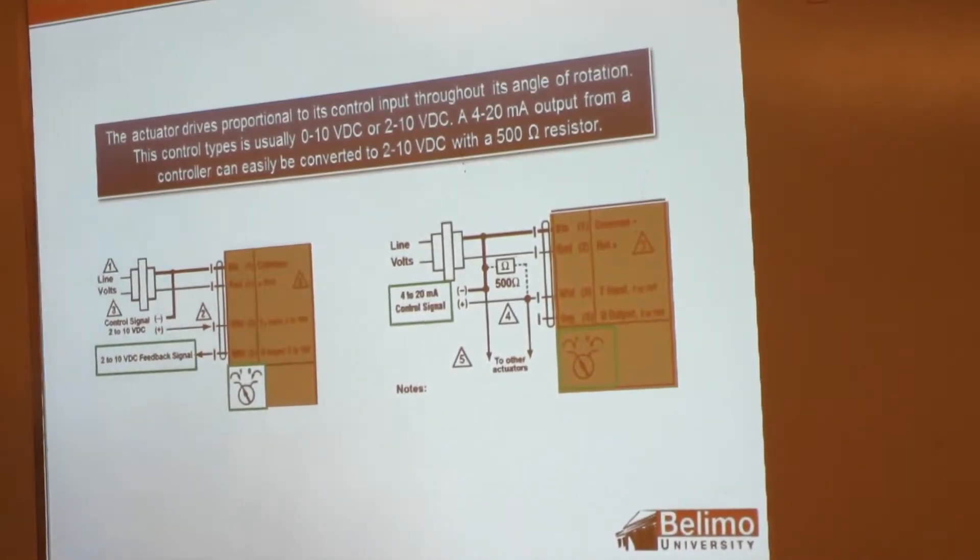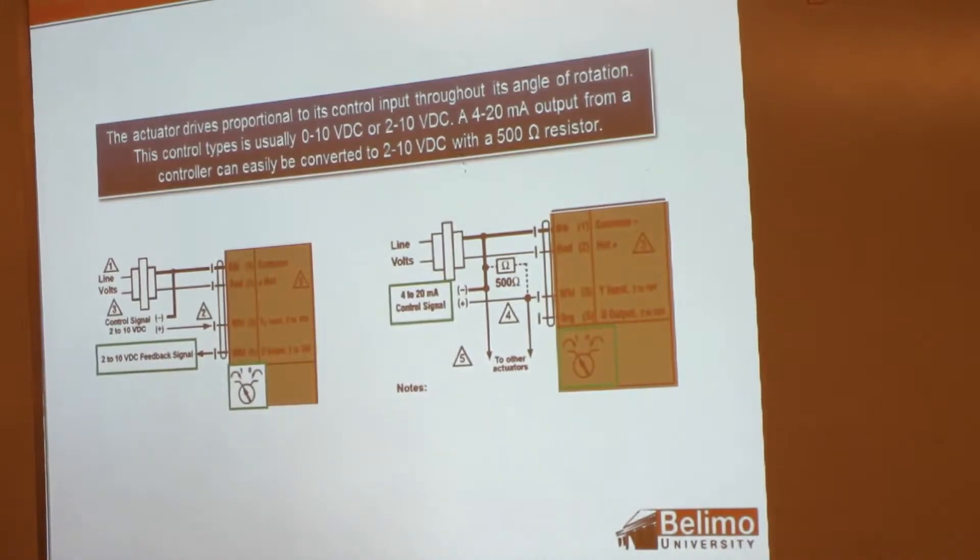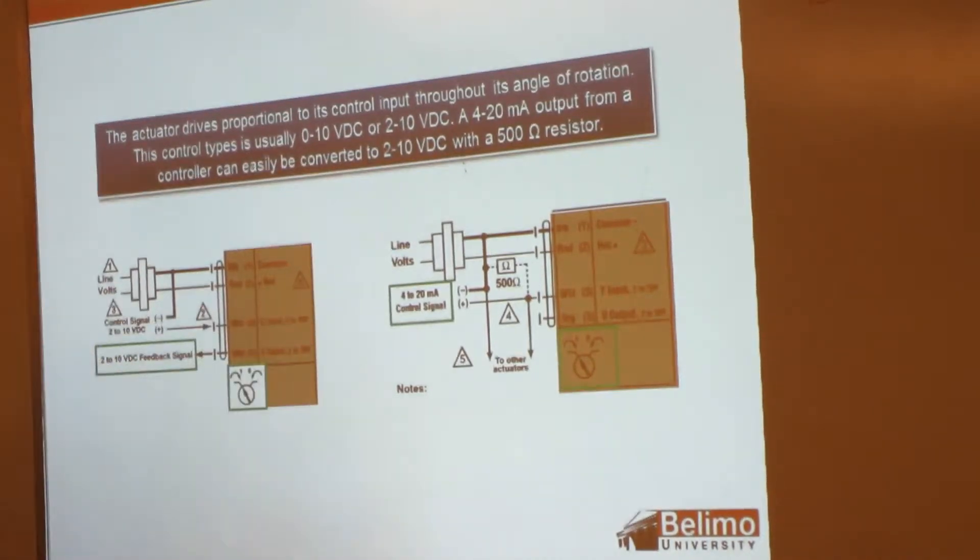With proportional actuators like these, we're using 0 to 10, 2 to 10, 4 to 20 with the Belimo actuators. If you want to do 4 to 20 you need a 500 ohm resistor. You don't have a switch on, we do not have a switch for the 4 to 20, we need a resistor.